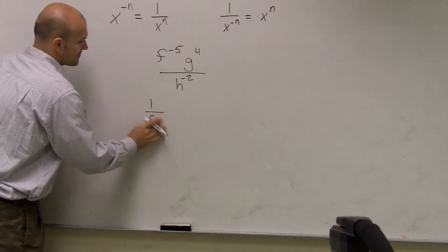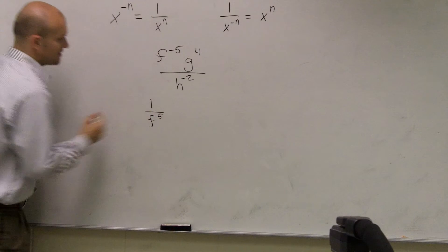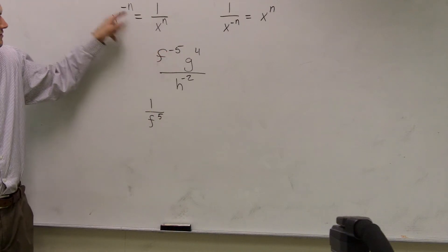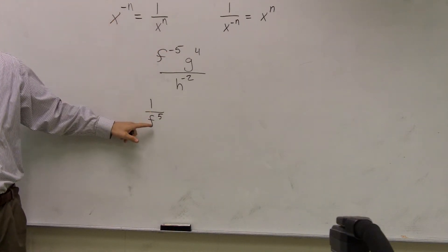Or I'm sorry, to the 5, not to the n, to the fifth. If it's negative, you can put it under 1 to make it positive, right?